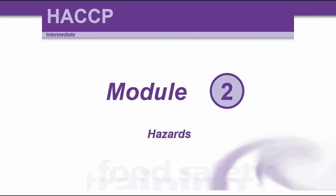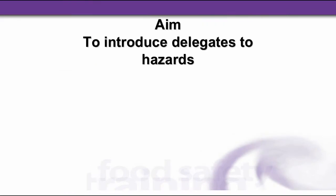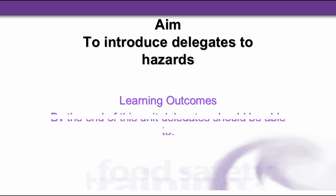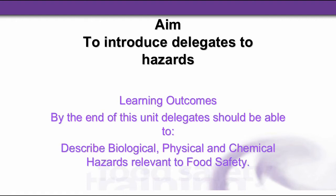Now let's look at module two. We looked at the introduction to HACCP, so now let's look at hazards. The aim of this unit is to introduce you to hazards. The learning outcomes are: by the end of this unit, you'll be able to describe biological, physical, and chemical hazards relevant to food safety.